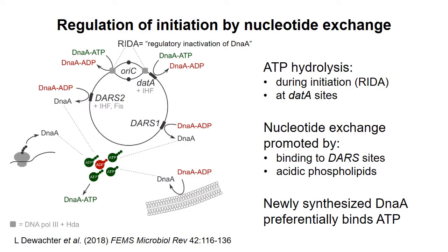This figure summarizes regulation of replication initiation by nucleotide exchange in E. coli. The central circle is the bacterial genome. When replication starts, the rate of ATP hydrolysis by DNAa is increased — this is called RIDA, or regulatory inactivation of DNAa. Also, when initiation has occurred, the protein IHF promotes binding of DNAa-ATP to the DAT-A locus on the genome, which contains several DNAa binding sites. Binding of DNAa to these sites promotes hydrolysis of ATP to ADP. Both of these processes, RIDA and DAT-A binding, convert DNAa to its inactive ADP-bound form, preventing reinitiation of replication.